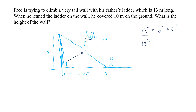So 13 squared equals h squared plus 10 squared, where h is the height of the wall. 13 squared is 169, so 169 equals h squared plus 100.